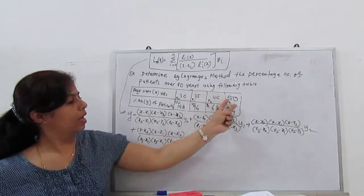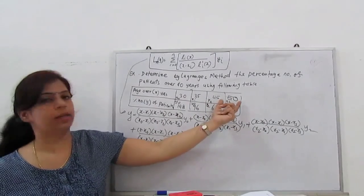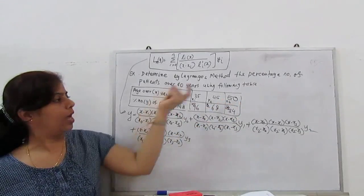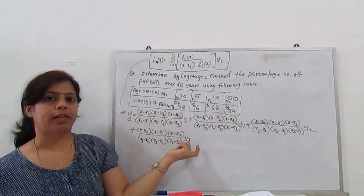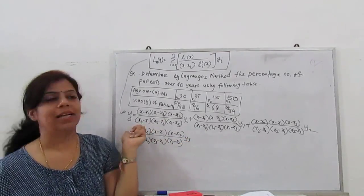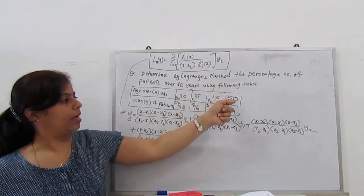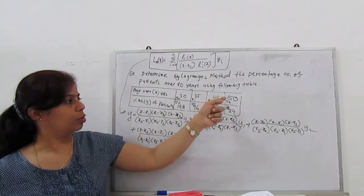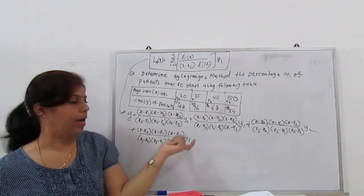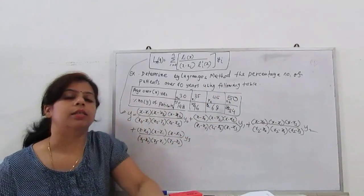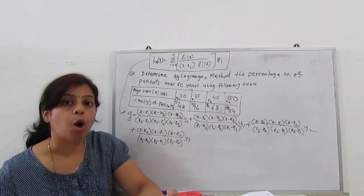Similarly when we calculate for y1: (x-x0)(x-x2)(x-x3)/(x1-x0)(x1-x2)(x1-x3) times y1. Similarly this process for x2 and y2: (x-x0)(x-x1)(x-x3)/(x2-x0)(x2-x1)(x2-x3) times y2, and for y3. This is our formula.